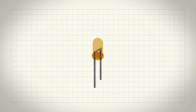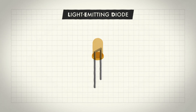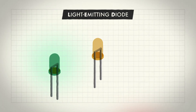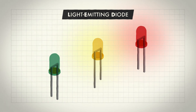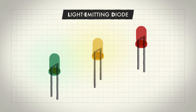One of the simplest and most used components in your toolkit is the LED. This handy acronym stands for Light Emitting Diode. LED bulbs can be used in any application where you need to show something happening, or notify the user that something is ready.